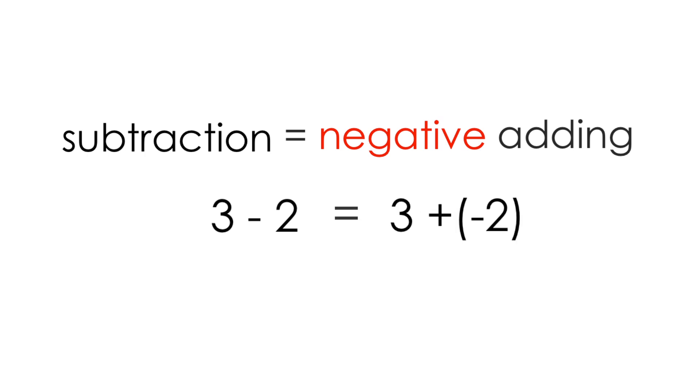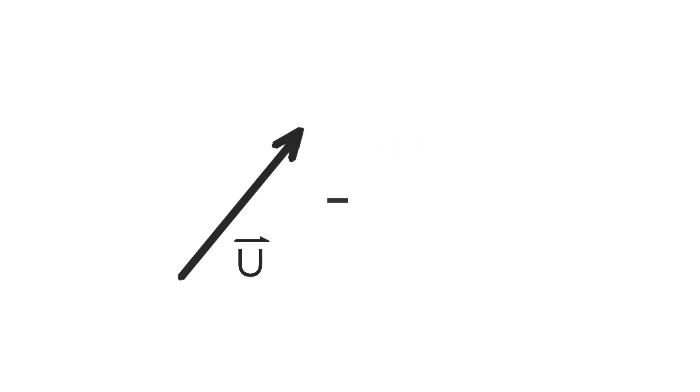We're going to apply the idea that subtraction is really just adding a negative to understand how to perform vector subtraction geometrically. The process is similar to the one we just looked at for addition of two vectors, with one additional step.